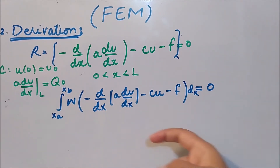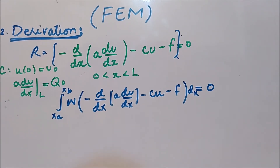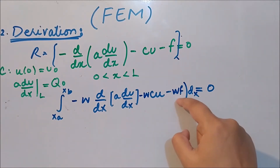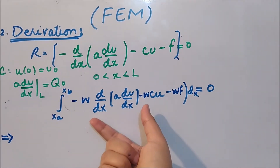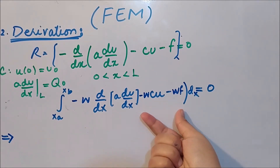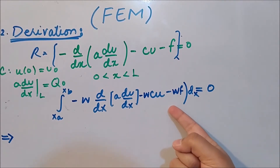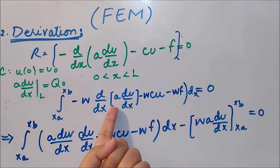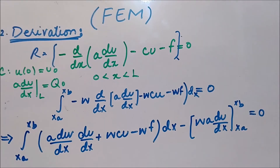The residual is set equal to zero. The second step in the weak form is performing integration by parts. We apply integration by parts to the first term; the other terms are not affected because they contain no differential of the displacement. The outcome distributes the differential operator equally on w and u, and we have a boundary term evaluated at the limits a to b.